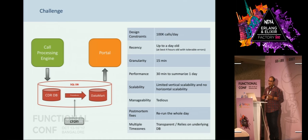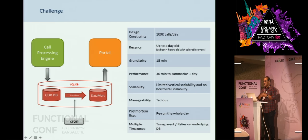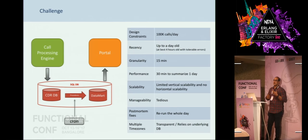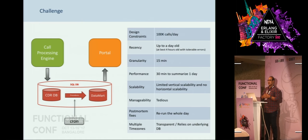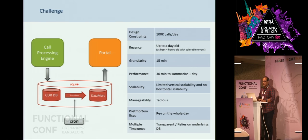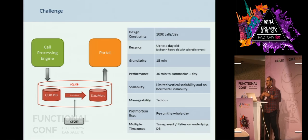It can tell you less than that — at best four hours with certain tolerable errors. The good thing about data mart reporting is that there is a certain tolerable error that is acceptable. They might not need to say 23.65 percent of the calls are dropping — it can simply say 23 percent. Now, the problem we were facing was that performance was an issue. It could do only 30 minutes of crunching of the data for one single day and we had a lot of issues about scalability.